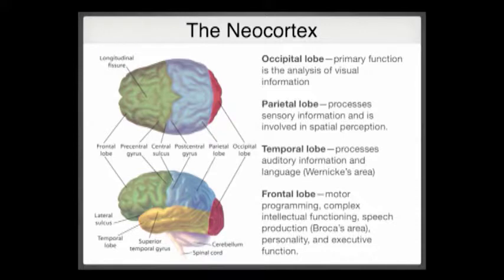Finally, going forward, we have the frontal lobe — the most complex, with the biggest mixture of associated functions. In addition to controlling motor movements via the motor cortex, which sits right at the boundary, everything forward from there is much more complex: personality, IQ, decision-making ability, and rationality all tend to be carried out in the frontal cortex.